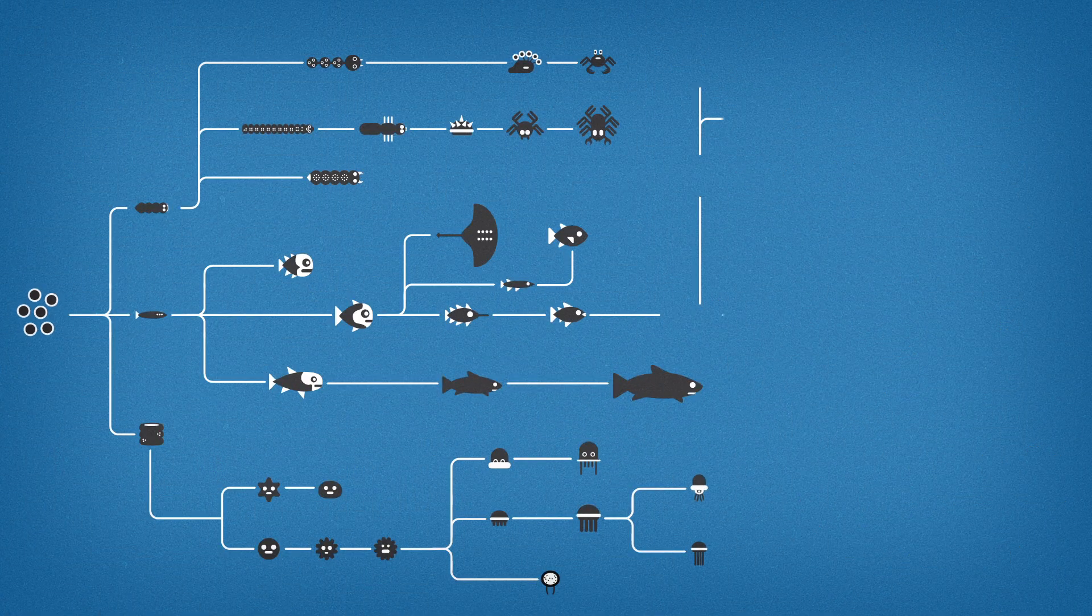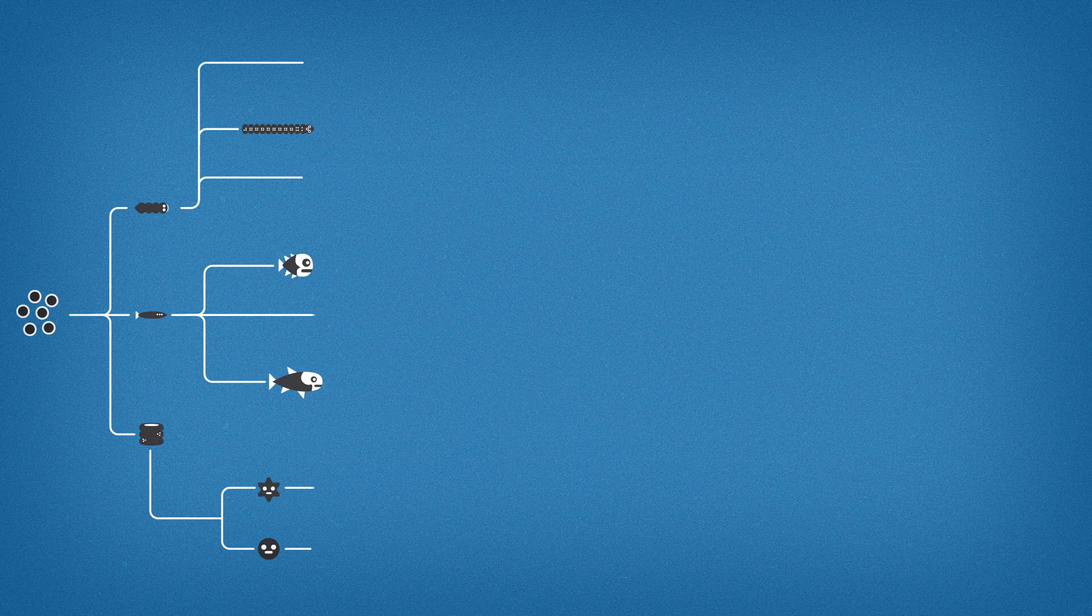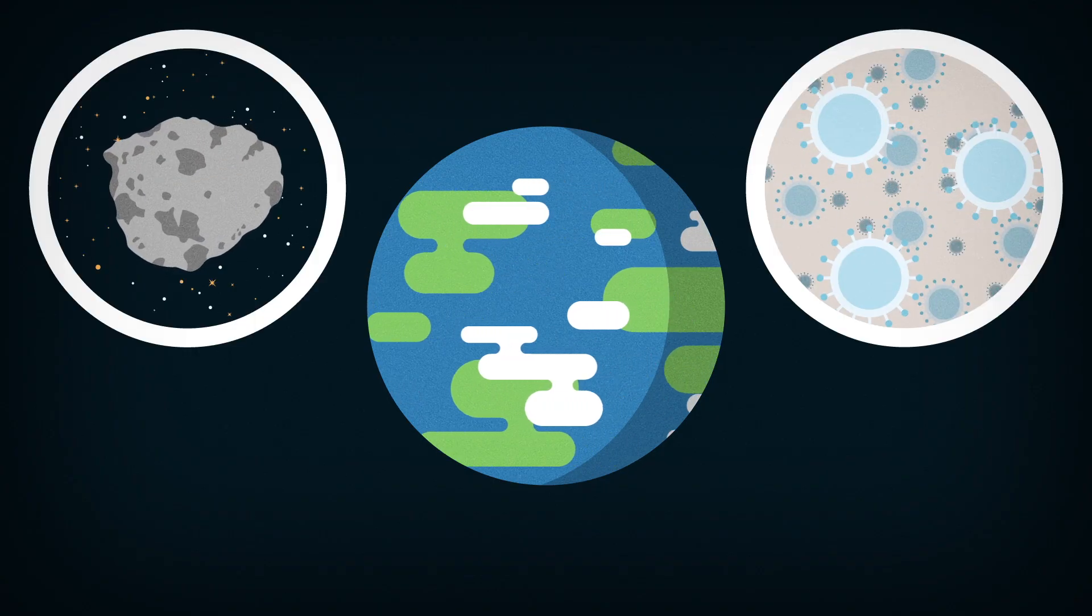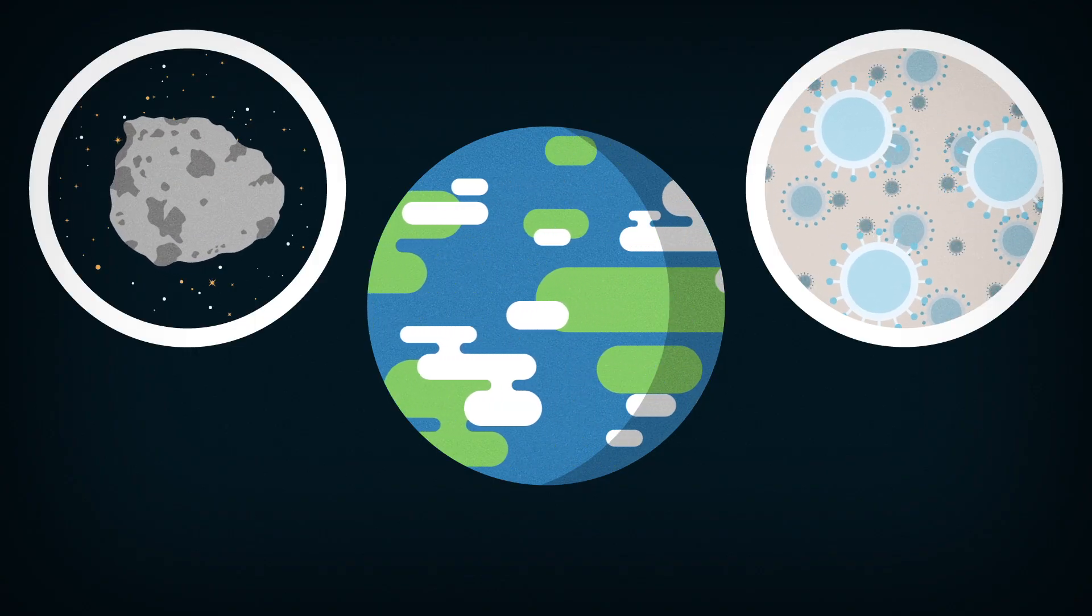We stem from an ancient life form that began living about 3.5 billion years ago. We feel like we're in control of this planet, but we aren't really. One little asteroid or one creative virus is really all it would take to kill us off for good.